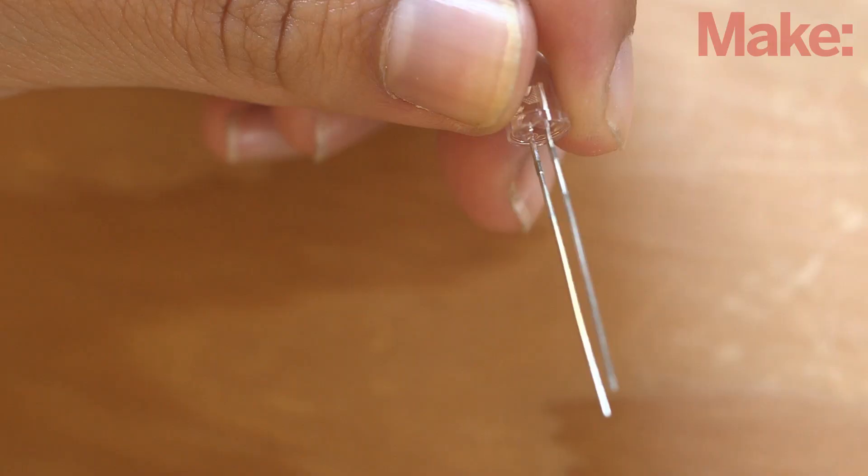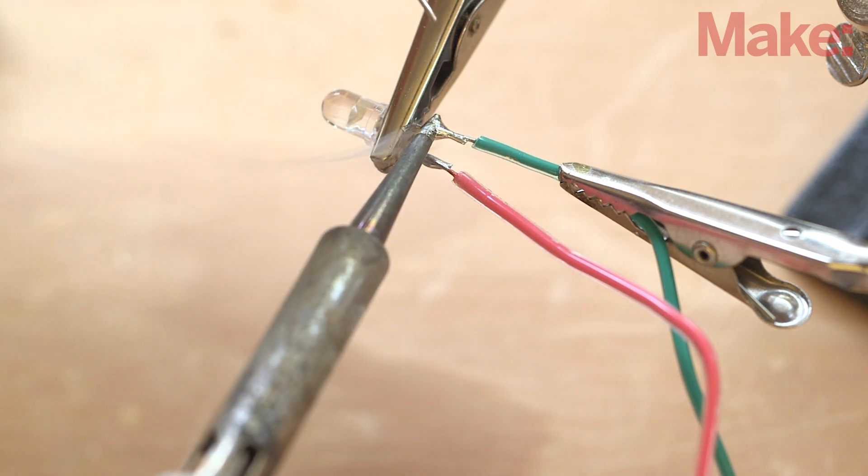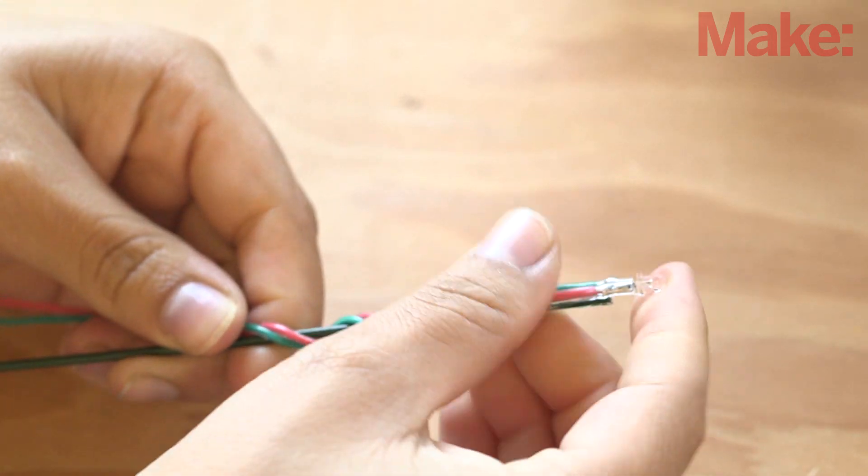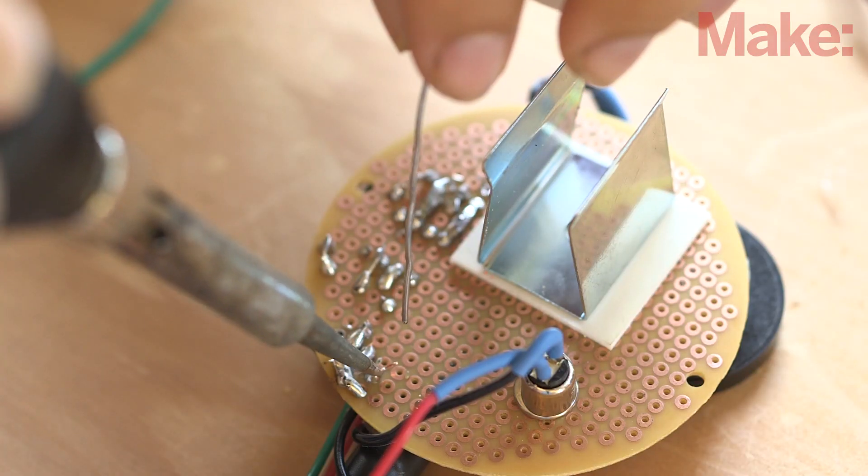Now to prepare the LED, cut lengths of wire approximately four times the length of your light tube. Strip and solder the wire to the LED leads, and wrap the wire around a length of rod used to slide the LED in and out of the tube. Connect the other ends of wire to the PCB.